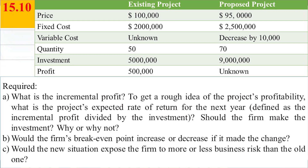The firm estimates that it can change its production process, adding $4,000,000 to assets and $500,000 to fixed operating cost. This change will reduce variable cost per unit by $10,000 and increase output by 20 units. However, the sale price on all units must be lowered to $95,000 to permit sales of the additional output.